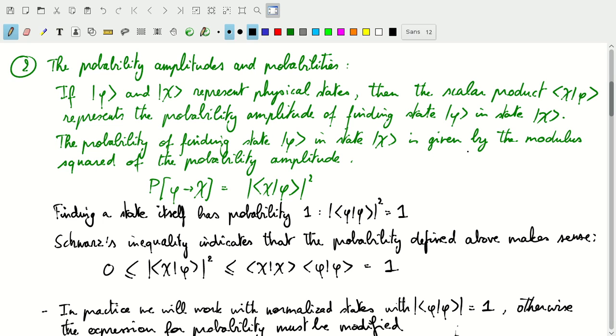The second postulate connects probability amplitudes and probabilities to transitions from one state to another. If we have two states phi and chi representing those physical states by the first postulate, then the scalar product between those two, chi scalar product with phi, represents a probability amplitude of finding a state phi in the state chi.